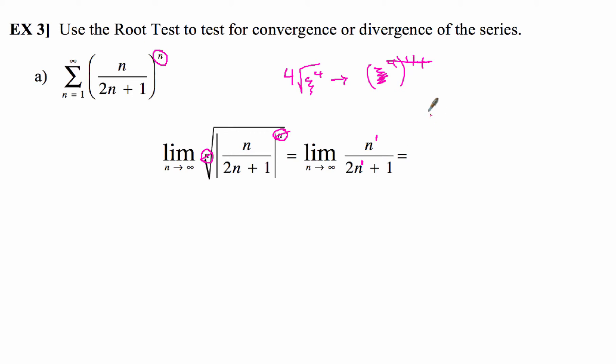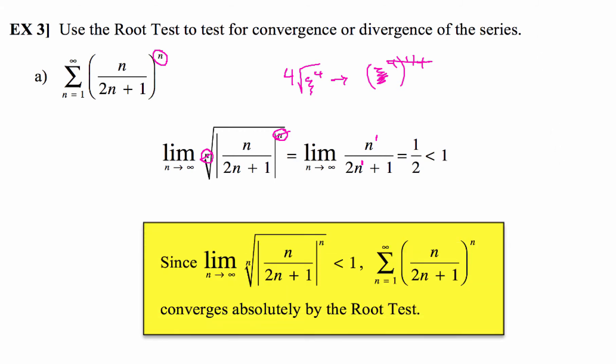2n to the first power. So since our exponents are both the same, then we just use the ratio of n over 2n, which gives us 1 half. Which of course is definitely less than 1, so that tells us that our series is going to converge absolutely.